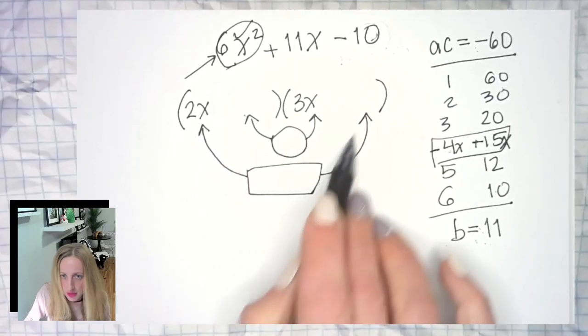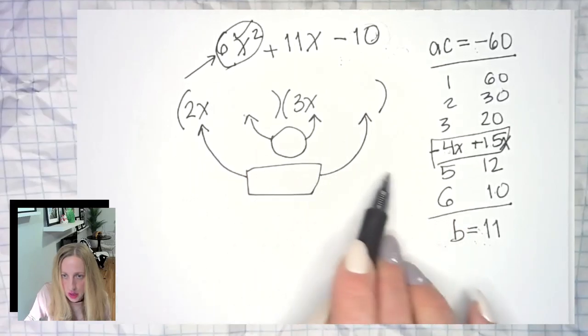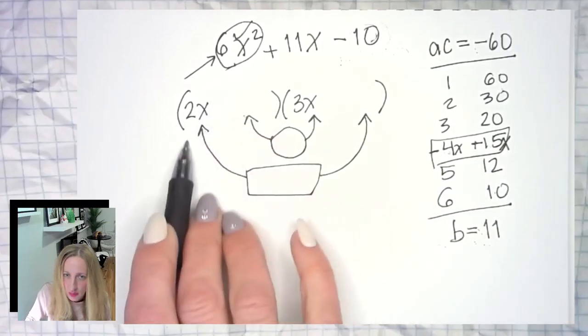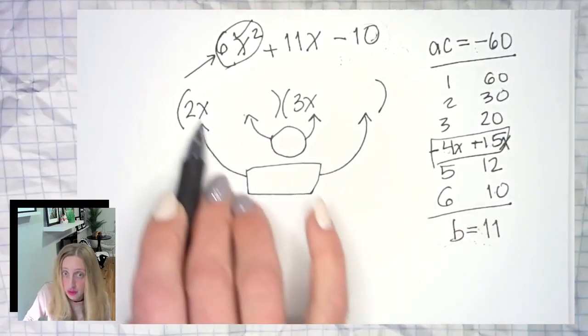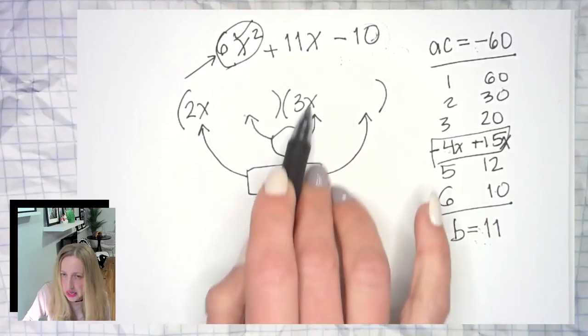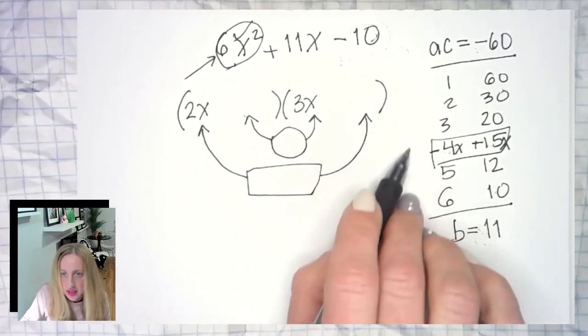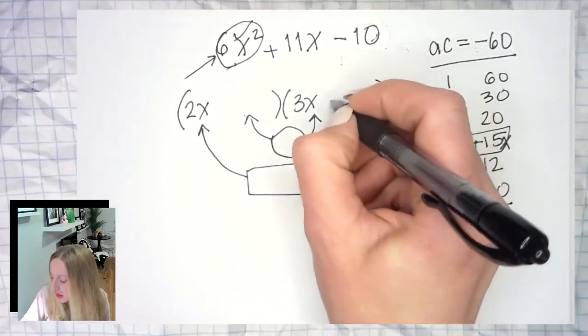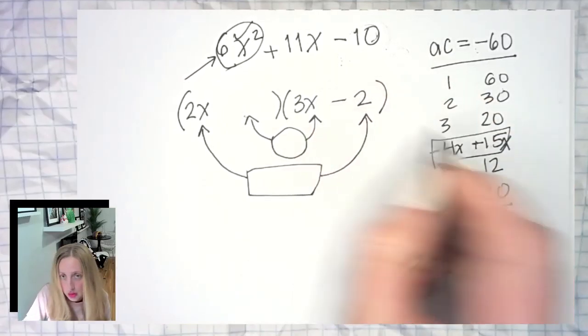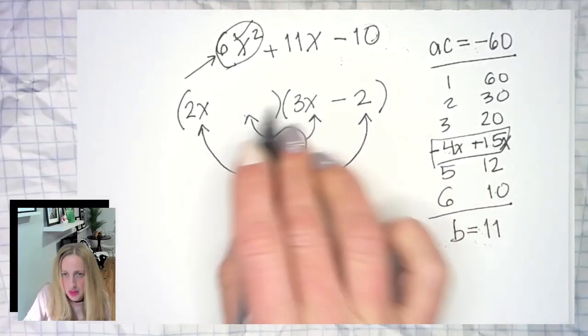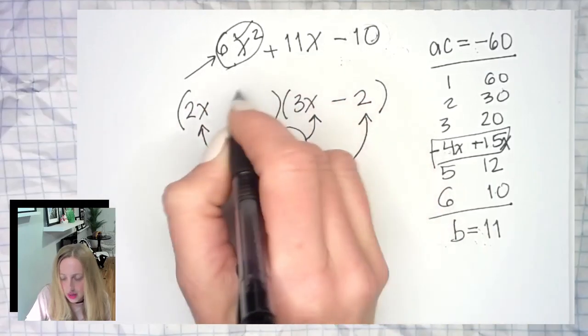So 2x times something at the end will equal either 4x or 15x. Well I'm assuming this is going to be the 4x because I have a 2, and this is going to be the 15x because I got a 3. So if that's 4x and I need negative 4x, then I need negative 2, so I have a negative 4x. Yay! And then 2 times what is 10? Well that'll be 5. And I need negative 10, so plus 5. Plus 5, 15x.